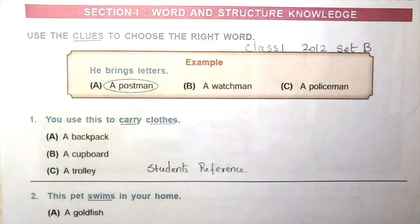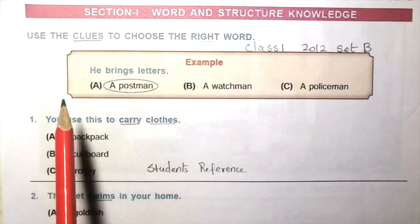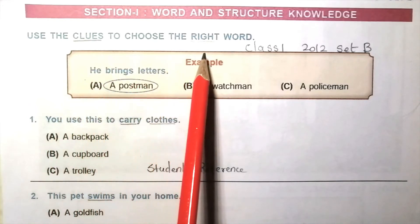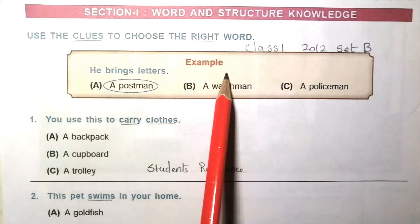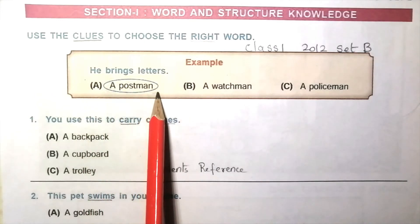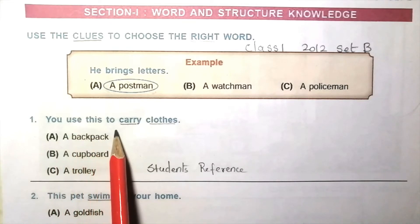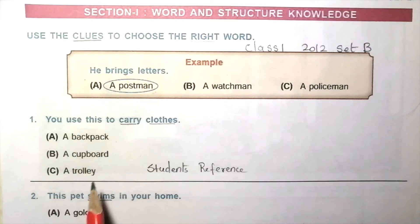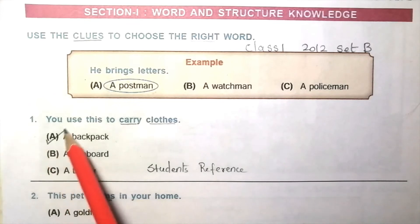Today's first topic is word and structure knowledge. Use the clues to choose the right word. Example: he brings letters. A postman. Question 1: You use this to carry clothes. A backpack, a cupboard, a trolley. The answer is A, a backpack.